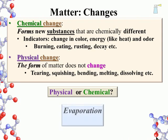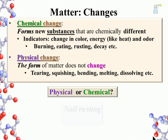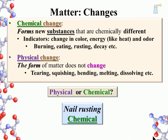We begin with evaporation — is it a physical or chemical change? It is a physical change. If water evaporates, it is still water, but in the vapor or gas form; the vapor form is not a new substance. Cutting a branch: physical or chemical? It is physical — cutting simply makes smaller pieces of the same substance. What about a nail that is rusting? It is chemical: the iron in the nail is chemically different than the iron in the rust.